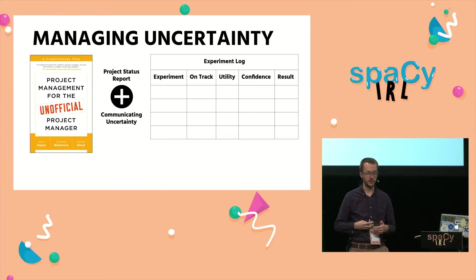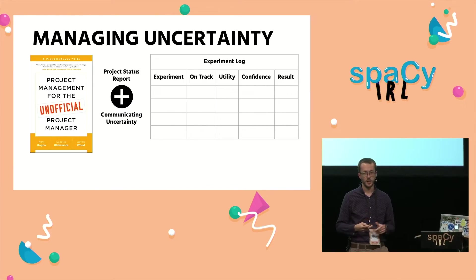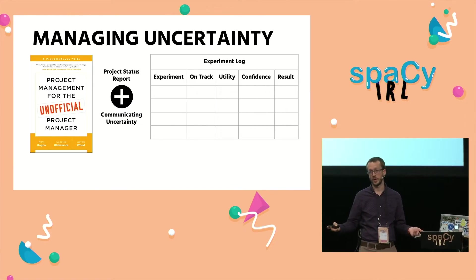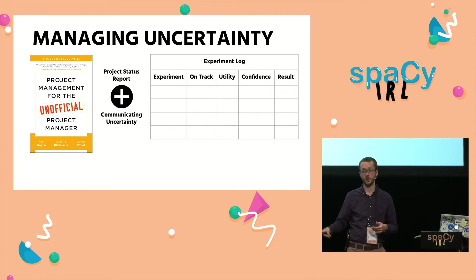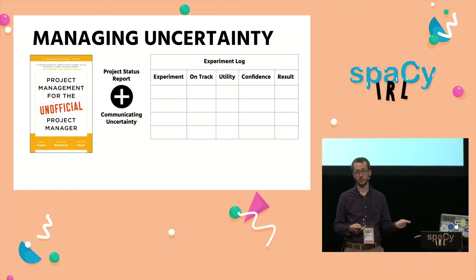You can track things like the name of the experiment, whether it's on track in terms of schedule, what the utility of completing that experiment would be, your confidence that it will be successful or unsuccessful, and what the actual result was.